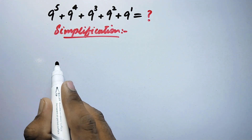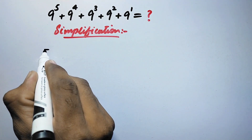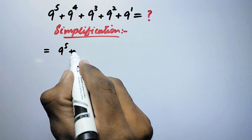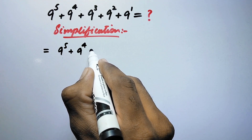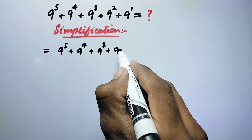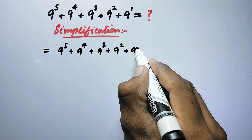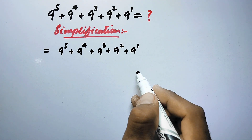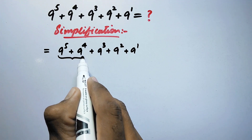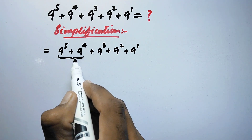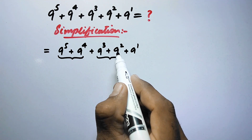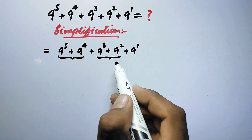So here we are going to write it equal to 9 to the power 5 plus 9 to the power 4 plus 9 to the power 3 plus 9 to the power 2 plus 9 to the power 1. From here, for the first two values we will take 9 to the power 4 as common factor, and from the next two values we will take 9 to the power 2 as common factor.